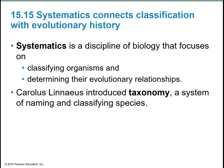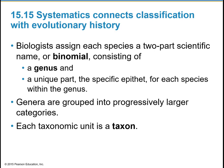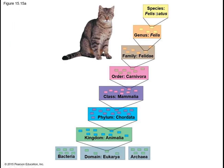Systematics is a branch of biology that focuses on classifying organisms and determining their evolutionary relationships. Carolus Linnaeus introduced taxonomy, a system of naming and classifying species. Biologists assign each species a two-part scientific name, or binomial, consisting of a genus and a unique specific epithet for each species within that genus. Genera are then grouped into progressively larger categories, and each taxonomic unit is called a taxon.